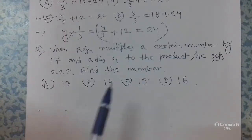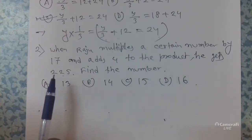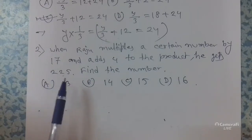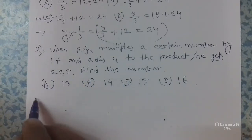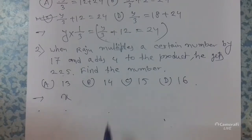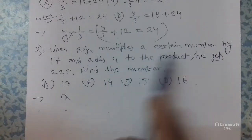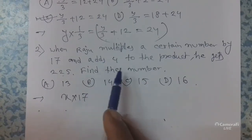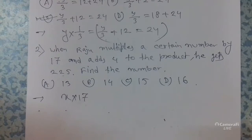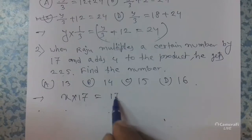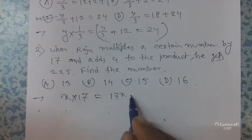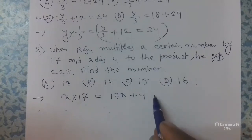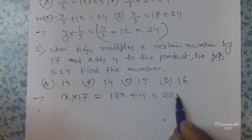The problem is: when Raju multiplies a certain number by 17 — so if we take the number as x, that means x multiplied by 17 — and adds 4 to the product, he gets 225. So the equation is 17x + 4 = 225.